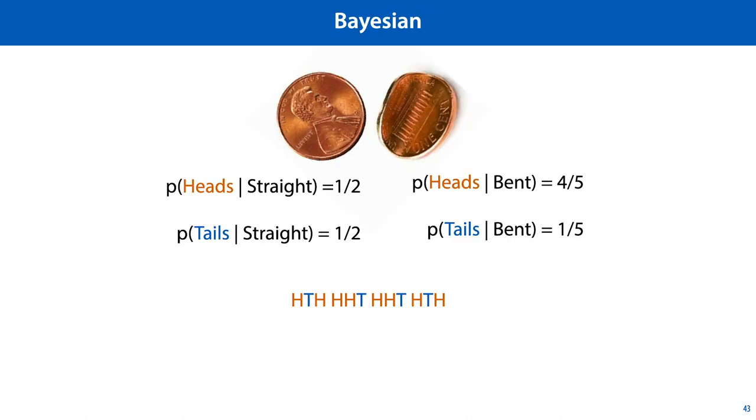Finally, let's return to our example of the straight and the bent coin, and see how a Bayesian would attack this problem. We won't go into the details here, but we will give a brief outline of how it works on this example, just to give you a basic idea.